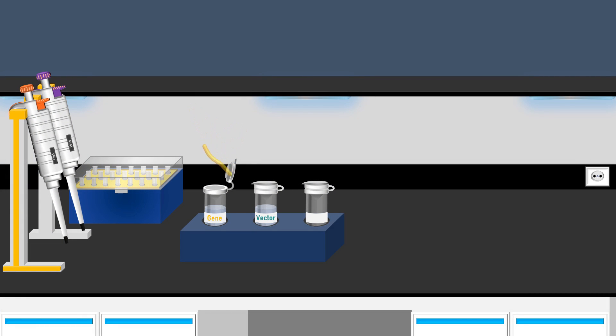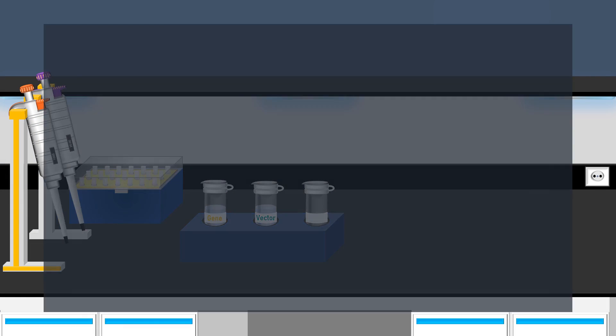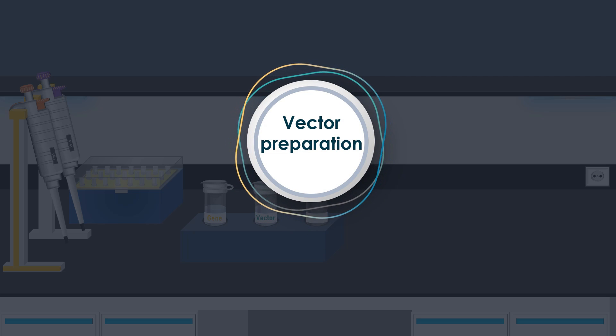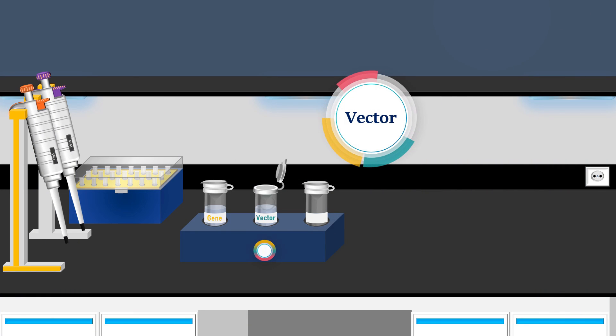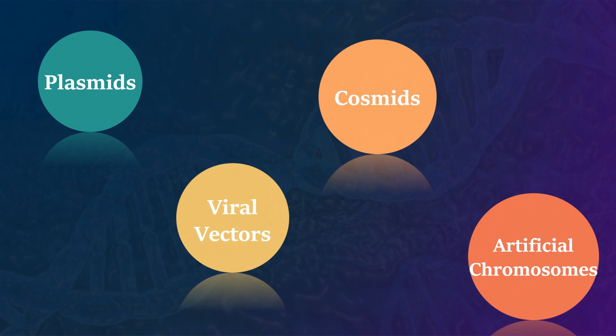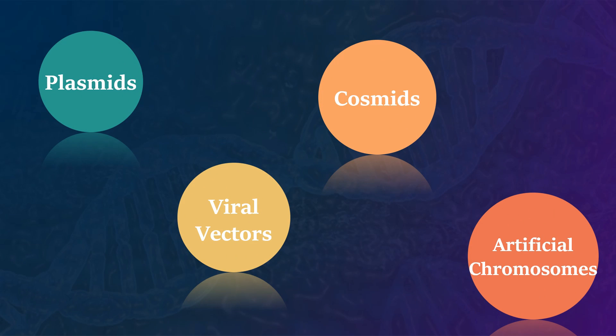Once we have our gene of interest, the subsequent step in recombinant DNA technology is the preparation of a transfer vector. The vector is a DNA molecule utilized as a carrier to transport a specific DNA segment into a host cell as part of a cloning. Vectors can take various forms, including plasmids, cosmids, viral vectors, or artificial chromosomes.